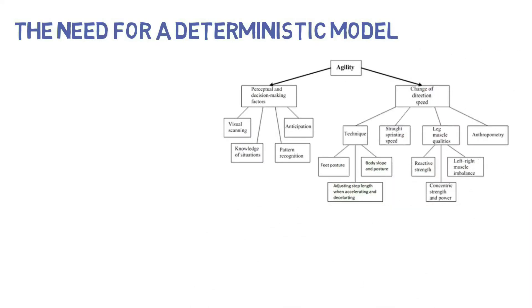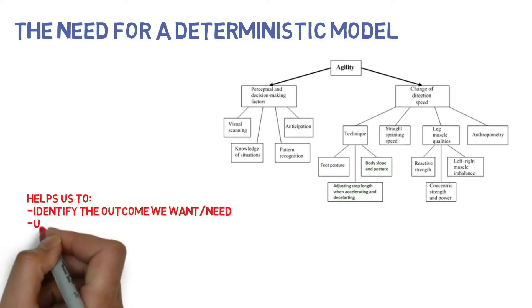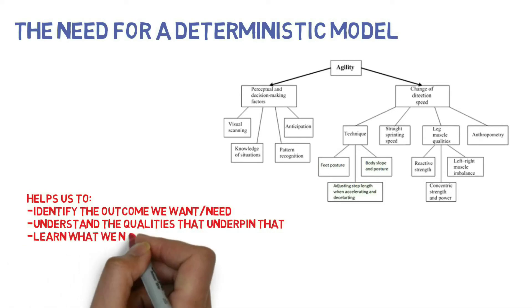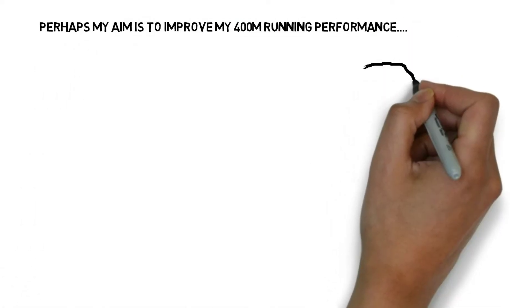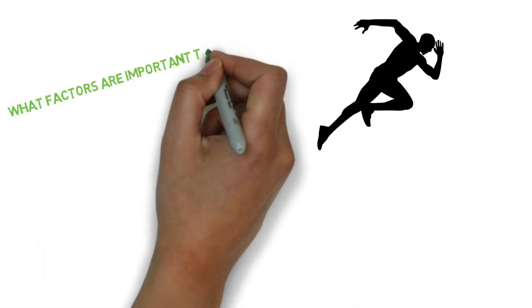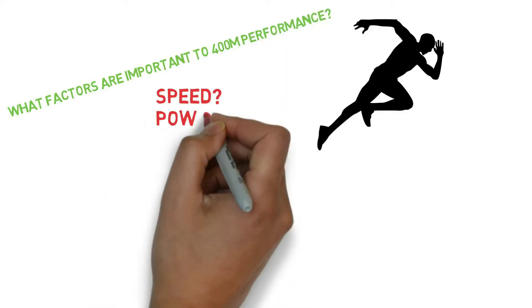So why would we create these flow models as seen in the picture here? They're really useful at helping us to identify the outcome that we want or need, understanding the qualities that underpin certain performances and seeing what it is that we need to address. So let's assume that my aim is to improve my 400 metre running performance, which obviously 400 metre running is a very complex sport.